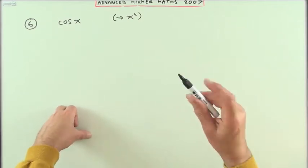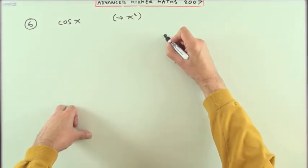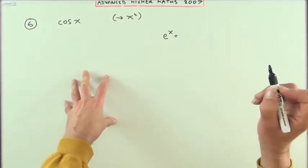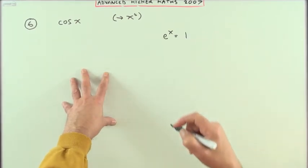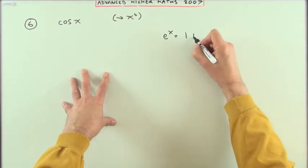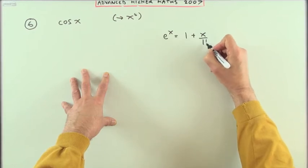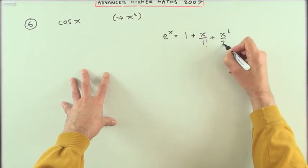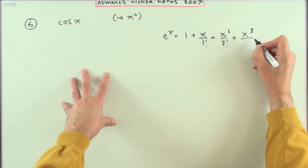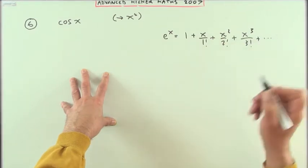In fact there's only one that you should learn and that's the e to the x one since that's just a straightforward pattern because it's got such a straightforward derivative. That's just 1 plus x over 1 factorial, x squared over 2 factorial and so on, following that pattern.